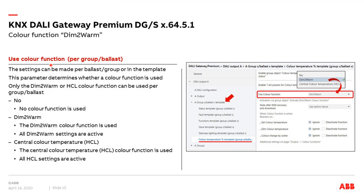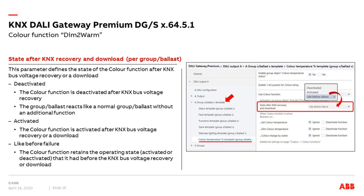Let's begin step by step. In the submenu for group or ballast, go to the template. After setting all status and fault parameters, the last submenu is Color Temperature (TCE) — the template for groups and ballasts. Here, under 'Use color function,' you can select: no color function, DIMM-TO-WARM, or central color temperature (HCL). Remember, only one color function can be used per group or ballast. Select DIMM-TO-WARM.